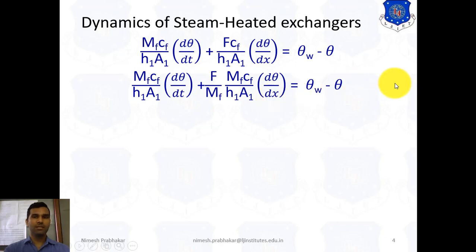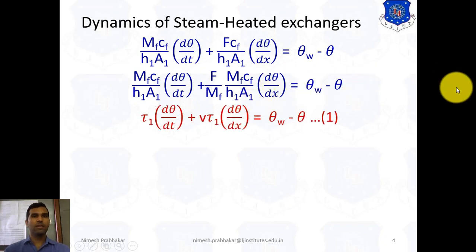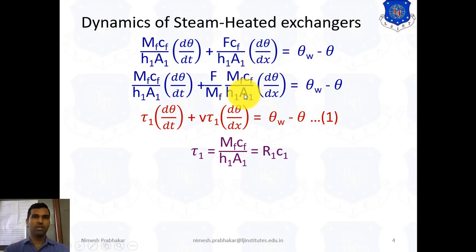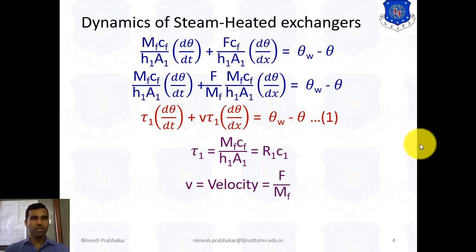We can write this equation as: τ1·(dθ/dt) + V·τ1·(dθ/dx) = θW − θ. Here, τ1 represents MF·CF / (H1·A1), and V represents F/MF, which is the velocity — the ratio of volumetric flow rate F to mass flow MF. This is the first simplified equation.